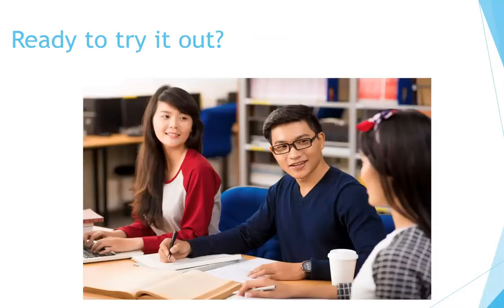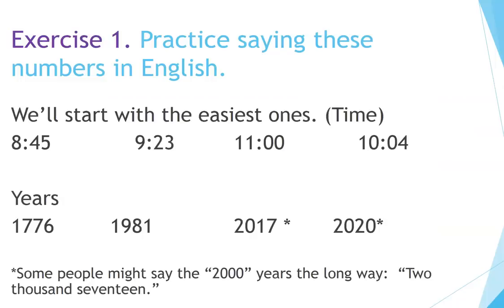Ready to try it out? Exercise one: practice saying these numbers in English. We'll start with the easiest ones — time and years. Some people might say the two-thousand years the long way, for example 'two thousand seventeen.'